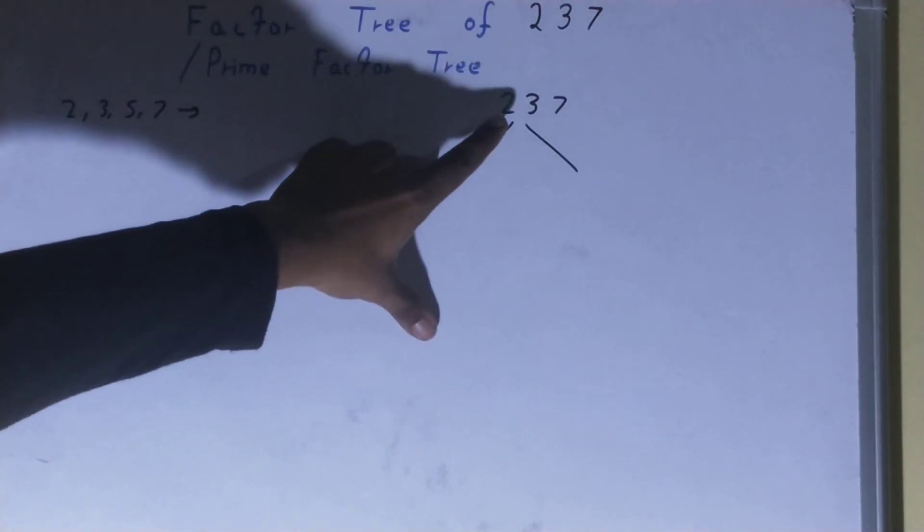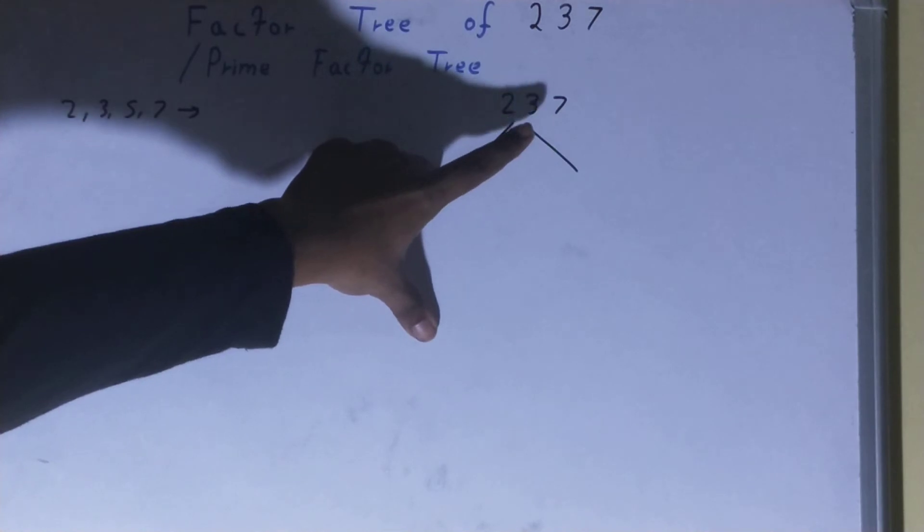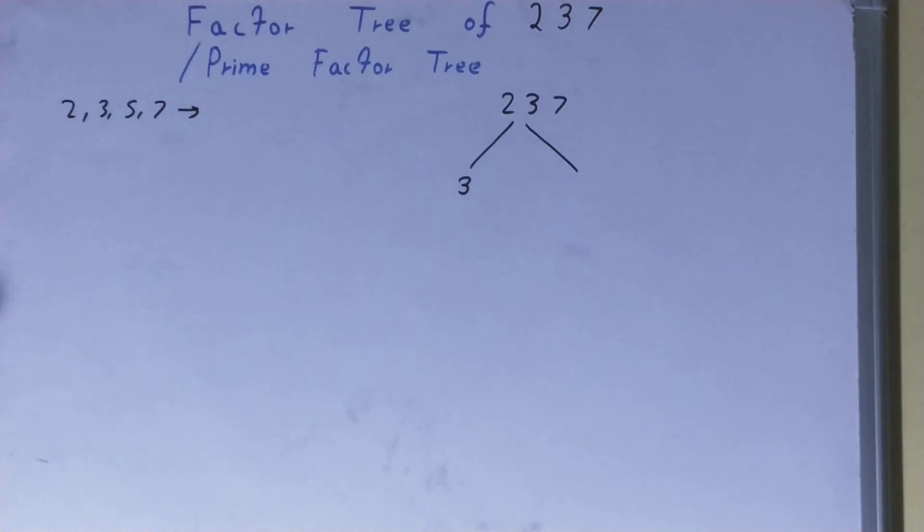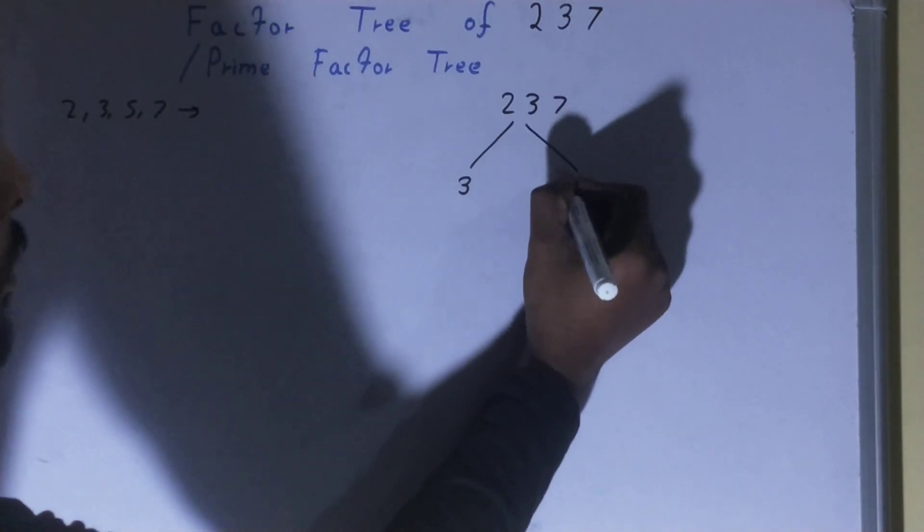Let's check: 3 sevens of 21, 2 sevens—yes, it is divisible by 3. So one of the numbers will be 3, the other will be whatever we get after dividing. So what we will get? We'll get 3 sevens of 21, 2 sevens—we'll get 79.